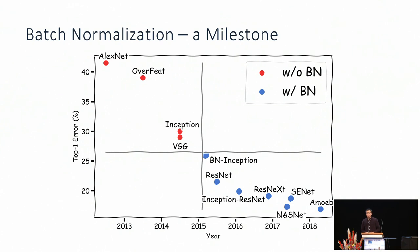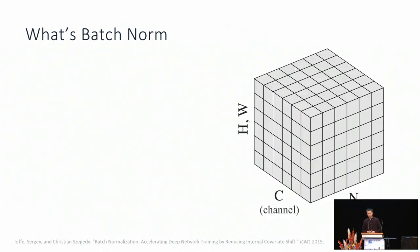To give some background, we'll start by looking at batch normalization. Batch normalization is a milestone technique in deep learning. In this figure, we plot ImageNet error rate of the best network architectures every year. All the red dots are networks without batch norm, and all the blue dots are networks with batch norm. We can see that everyone nowadays is using batch norm.